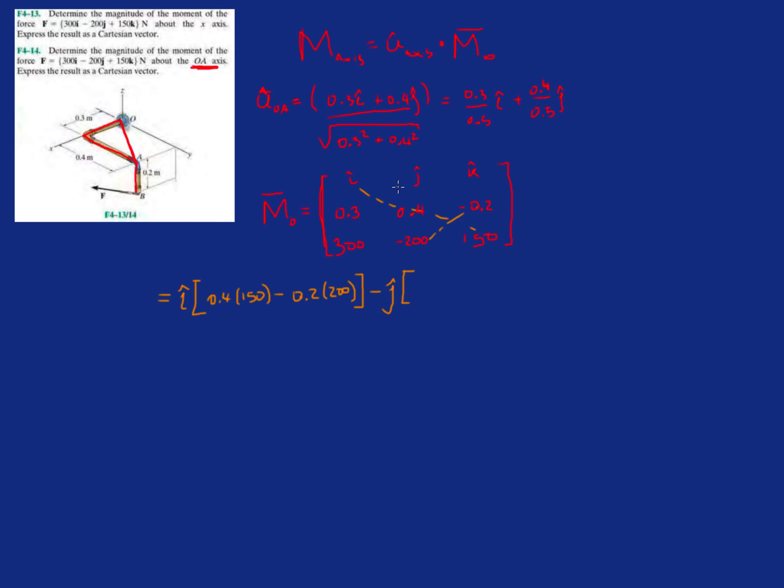All right, now let's switch directions so negative j. So now we're going to go 0.3 times 150 minus negative 0.2 times 300, so this becomes positive 0.2 times 300.